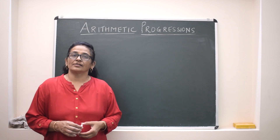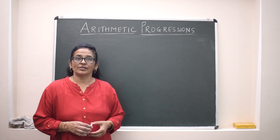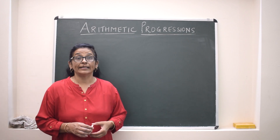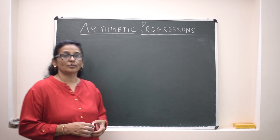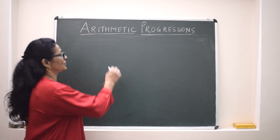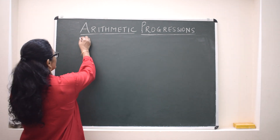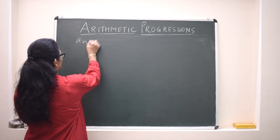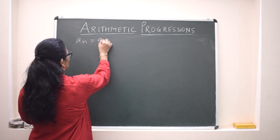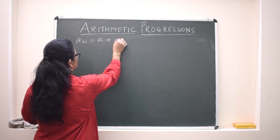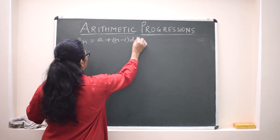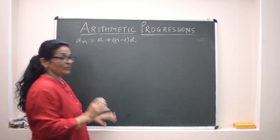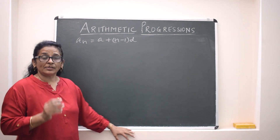In this lecture, we will discuss some questions based on the nth term of AP. The nth term of AP is expressed as AN = A + (N-1) × D.